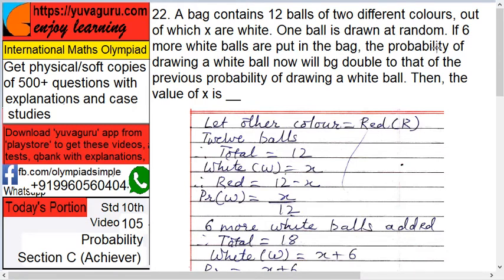the probability of drawing a white ball now is double to that of the previous probability of drawing the white ball. Then the value of x is? The solution is quite simple: find the probabilities before adding the six balls and after adding the six balls of getting a white ball.